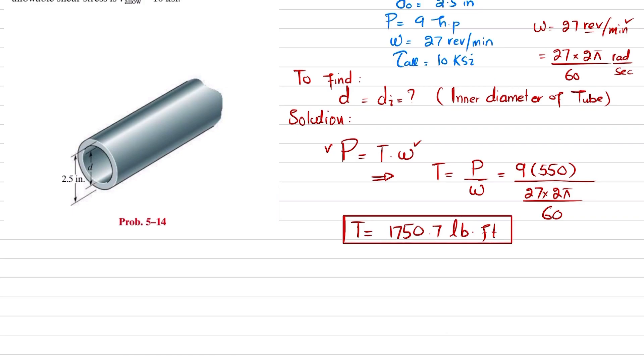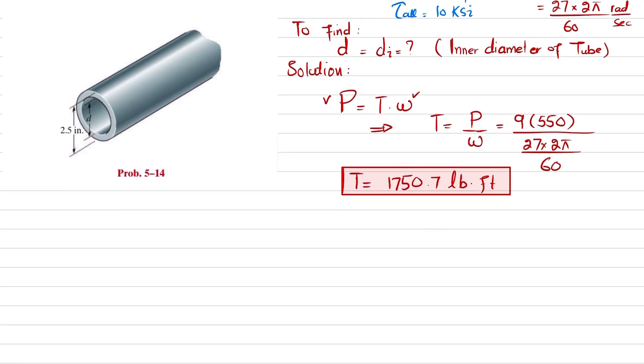That will be due to this 9 horsepower. Now you know that maximum shearing stress or allowable shearing stress is equal to T times c divided by J.